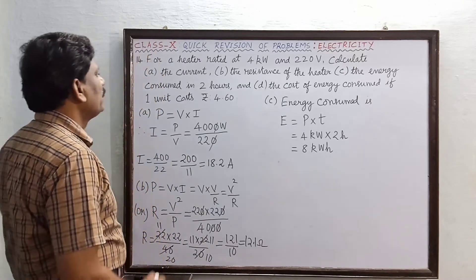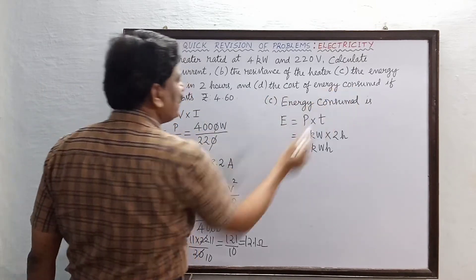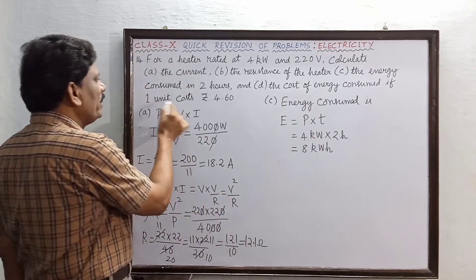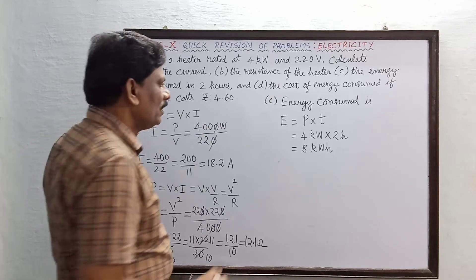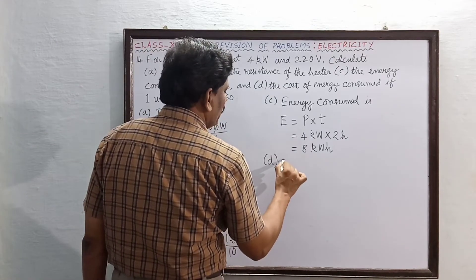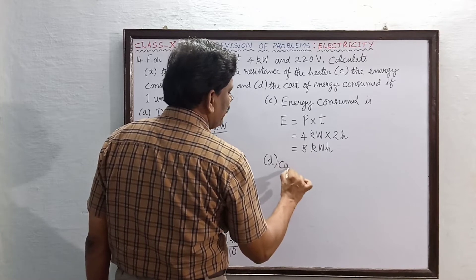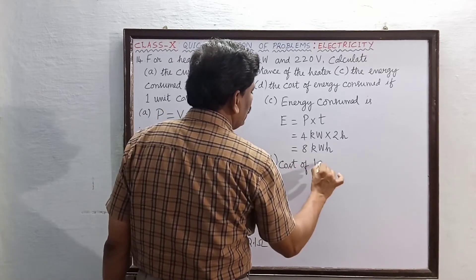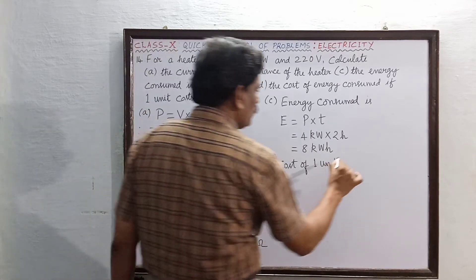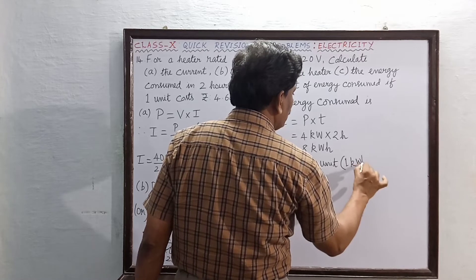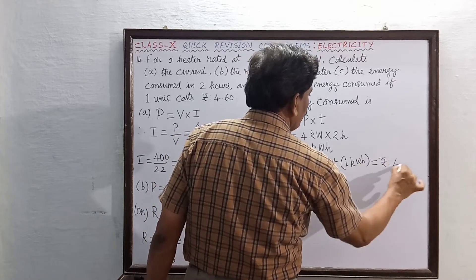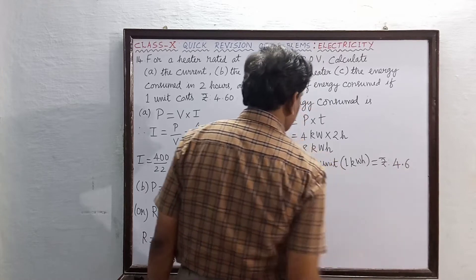The fourth subdivision is the cost of energy consumed. For this much energy, what is the cost if one unit costs rupees 4.60? Now the last subdivision. Cost of one unit, that is 1 kilowatt hour, one unit means 1 kilowatt hour is equal to rupees 4.6.